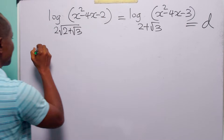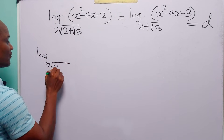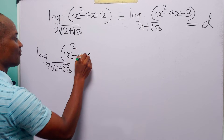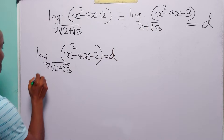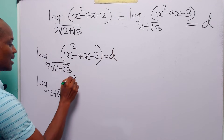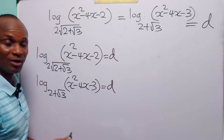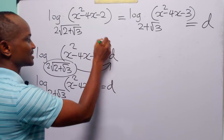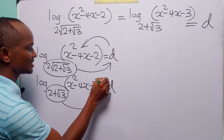This means that log to base 2 times the square root of 2 plus root 3 of (x² minus 4x minus 2) is equal to d. And also log to base 2 plus root 3 of (x² minus 4x minus 3) is equal to d. From these two statements, we have that the base raised to the power d equals the argument in each case.